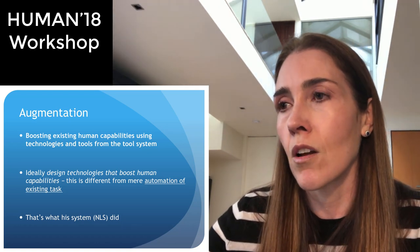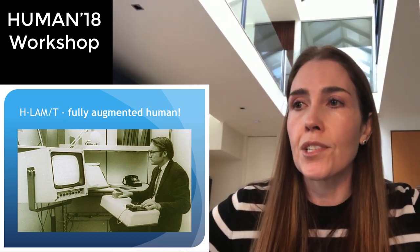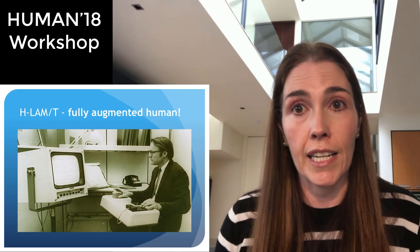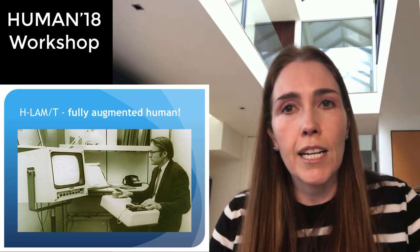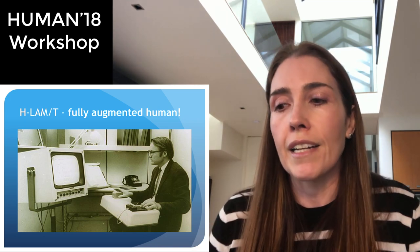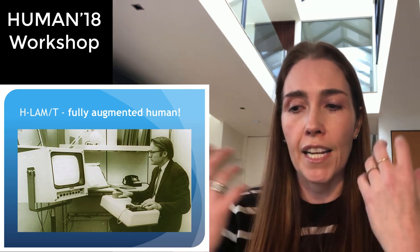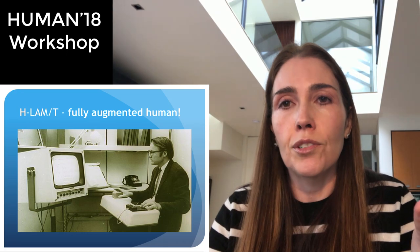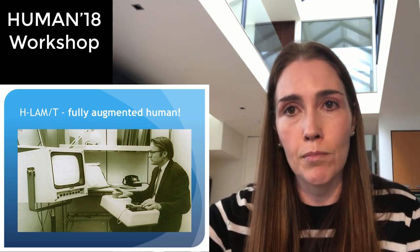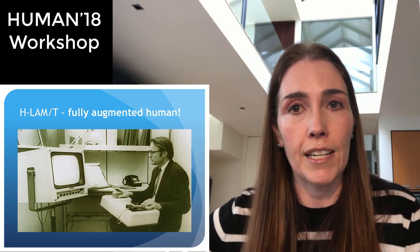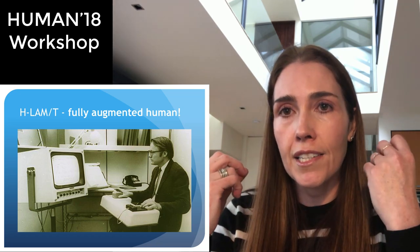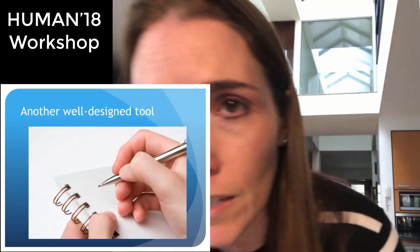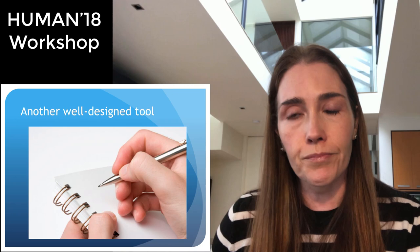Prior to the oNLine System, human beings had not used screen-based computing — they certainly hadn't used a mouse, hadn't used a keyboard, and weren't used to moving around in an information space. What NLS did when he was designing it was take our inherent capability to think in terms of symbol manipulation, which comes from language, and externalize that onto a machine — a screen so you can see the symbols, and a mouse so you can manipulate the symbols on the screen and tell the computer what you're actually looking at. He's taking an existing human capability and boosting it using the tool system.